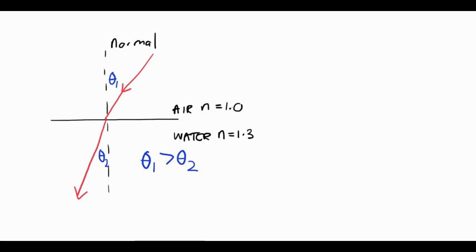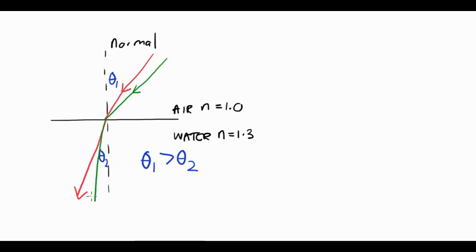If I increase the angle of incidence and make it even larger, that just means it's going to bend more towards the normal. So that is the case for going from optically less dense to optically more dense — the wave slows down and it bends towards the normal.